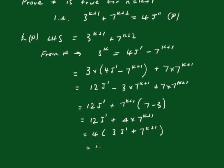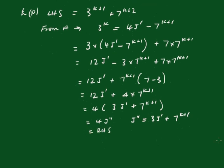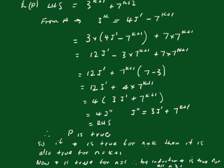So, that's equal to 4j double dash, because j double dash must be equal to 3j dash plus 7 to the k plus 1, which equals the right hand side. Therefore P(k+1) is true. So if the statement is true for n equals k, then it is also true for n equals k plus 1. The statement is true for n equals 1, therefore by induction the statement is true for all n greater than or equal to 1.